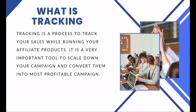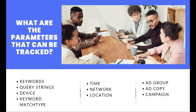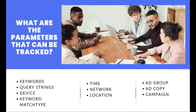These parameters — such as gender, device, and time — will help you scale down your campaign. BMOP will help you track these parameters. The parameters include keywords, query strings, device, keyword type, match type, time, network, location, ad group, ad copy, and campaign.